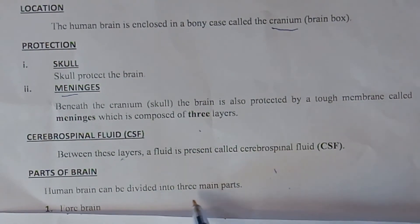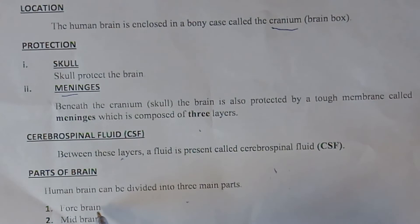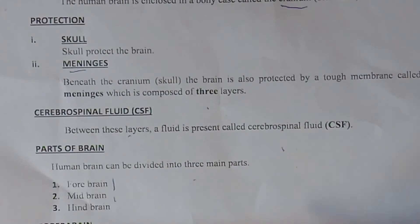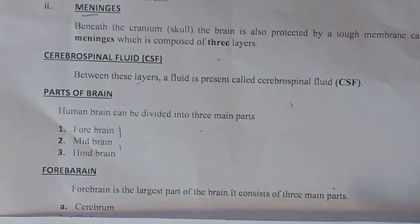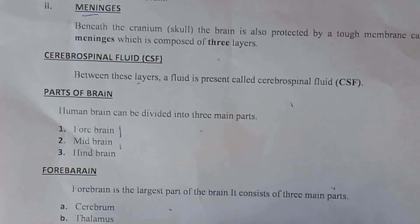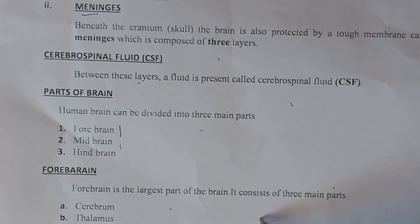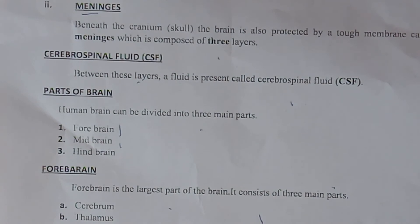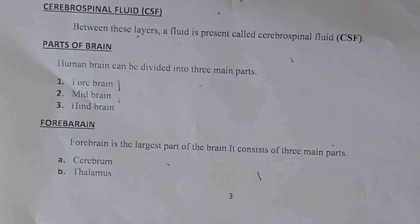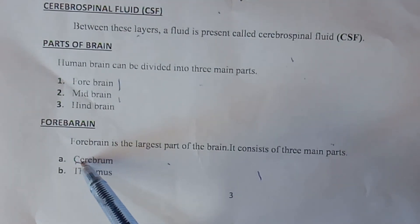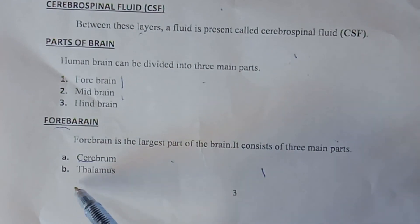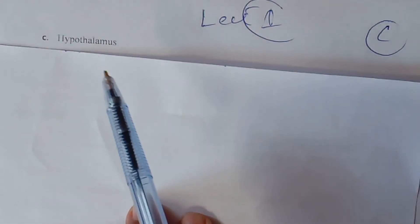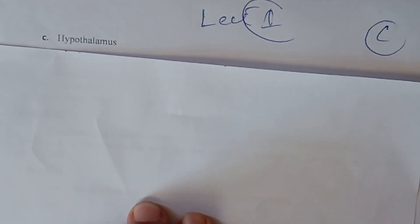The human brain can be divided into three main parts: forebrain, midbrain, and hindbrain. The forebrain is divided into three main parts: the cerebrum, the thalamus, and the hypothalamus.